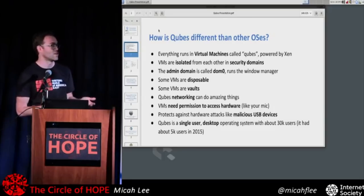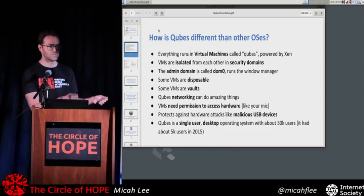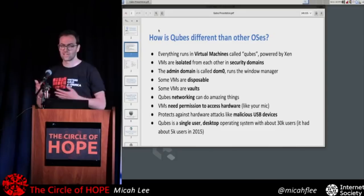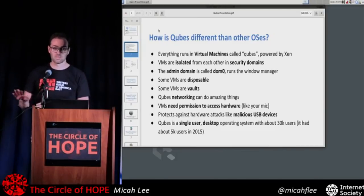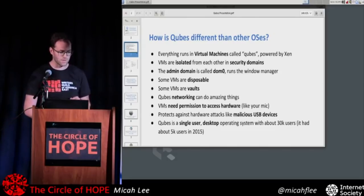For example, you could have a virtual machine that is very untrustworthy, and you use this to open up a sketchy PDF, or you could have a very trusted virtual machine that doesn't have any network access, and you keep your password database in there. There are also disposable virtual machines and all sorts of other stuff that I'm going to go into.